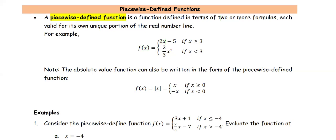A piecewise-defined function is a function defined in terms of two or more formulas, each valid for its own unique portion of the real number line. For example, f(x) equals 2x minus 5 if x is greater than or equal to 3, and f(x) equals 2 thirds times x squared if x is less than 3.